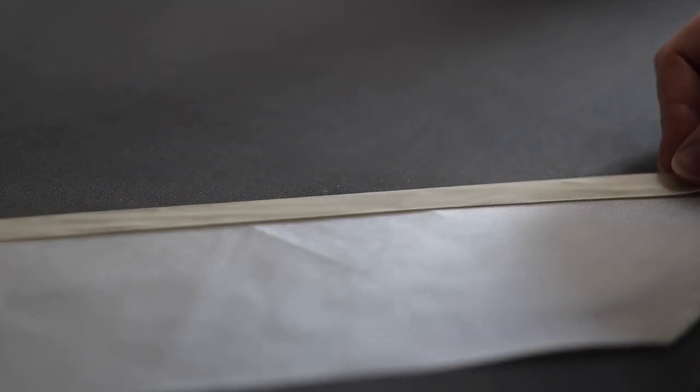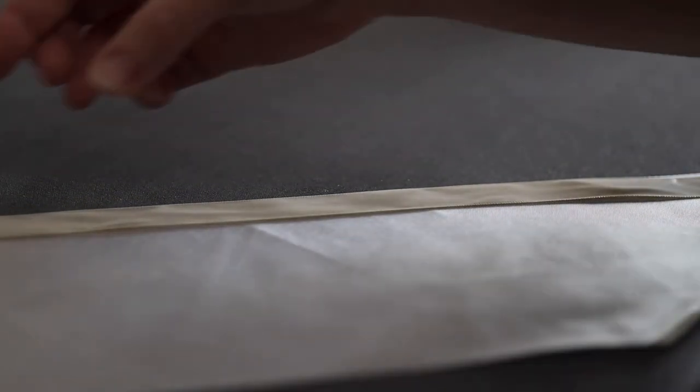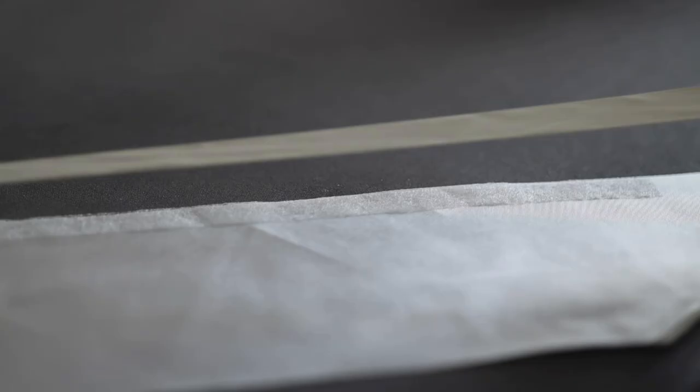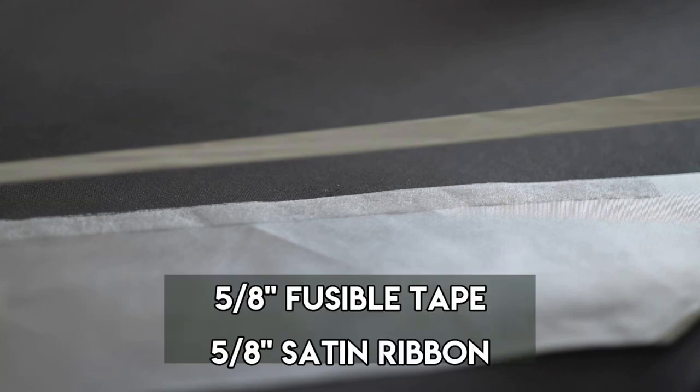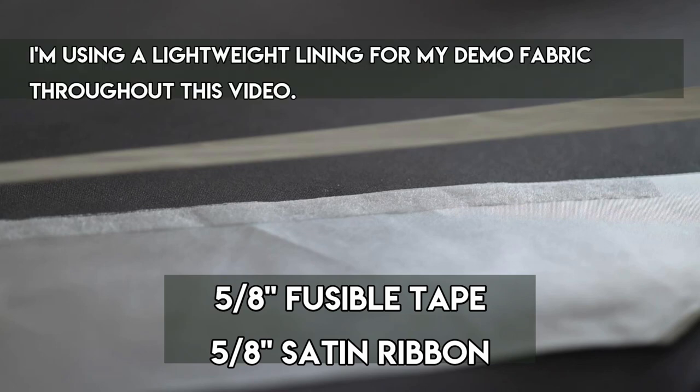I would say that this first method requires the most prep work of the three, but it is practically foolproof for dealing with my most ornery hems. There are wonder tapes on the market for this kind of job, but my favorite way of doing it is just to use 5/8 inch wide fusible tape and also 5/8 inch wide ribbon.